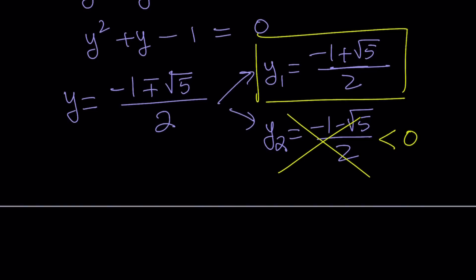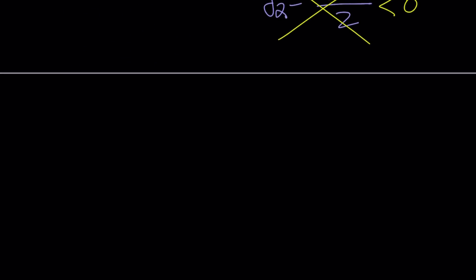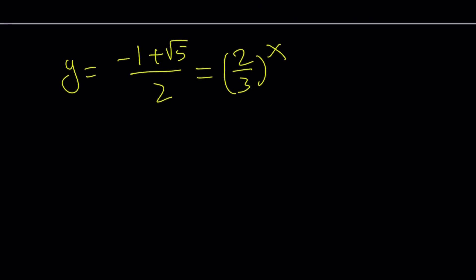We're going to go with y sub 1. Is that okay? Yes, because it's positive. How do I know that? Square root of 5 is greater than 1. So we're going to use y equals negative 1 plus square root of 5 over 2, and that's supposed to equal 2 over 3 to the power x. This is the most fun part, we're going to solve for x.